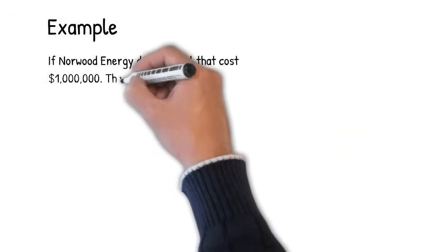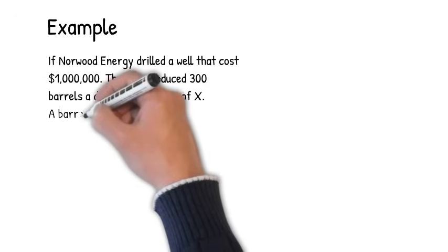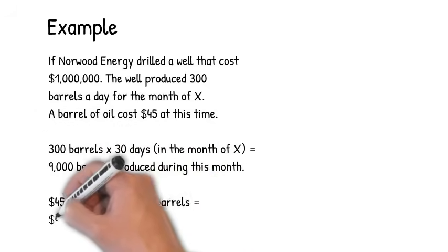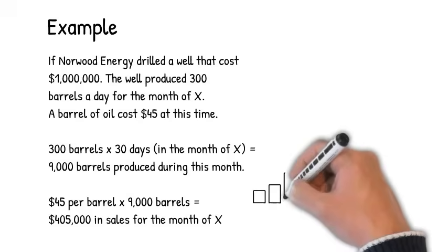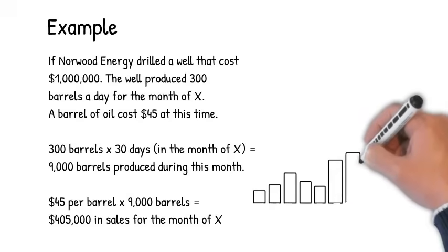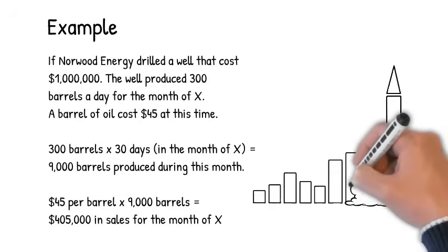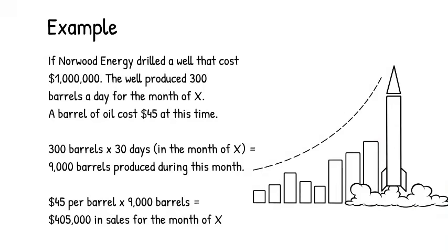Example continued. If Norwood Energy drilled a well that cost $1 million, the well produced 300 barrels a day for the month of X, a barrel of oil costs $45 at this time. 300 barrels times the 30 days in the month equals 9,000 barrels produced during the month. At $45 per barrel times the 9,000 barrels equals $405,000 in sales for the month of X.